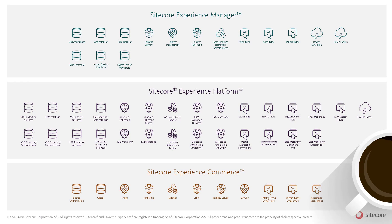The Sitecore 9 product series consists of three major products: the Sitecore Experience Manager, the Sitecore Experience Platform, and finally Sitecore Experience Commerce. Each of the Sitecore products contains a number of logical entities, which together with a number of cloud services forms the entire functionality of the Sitecore platform.